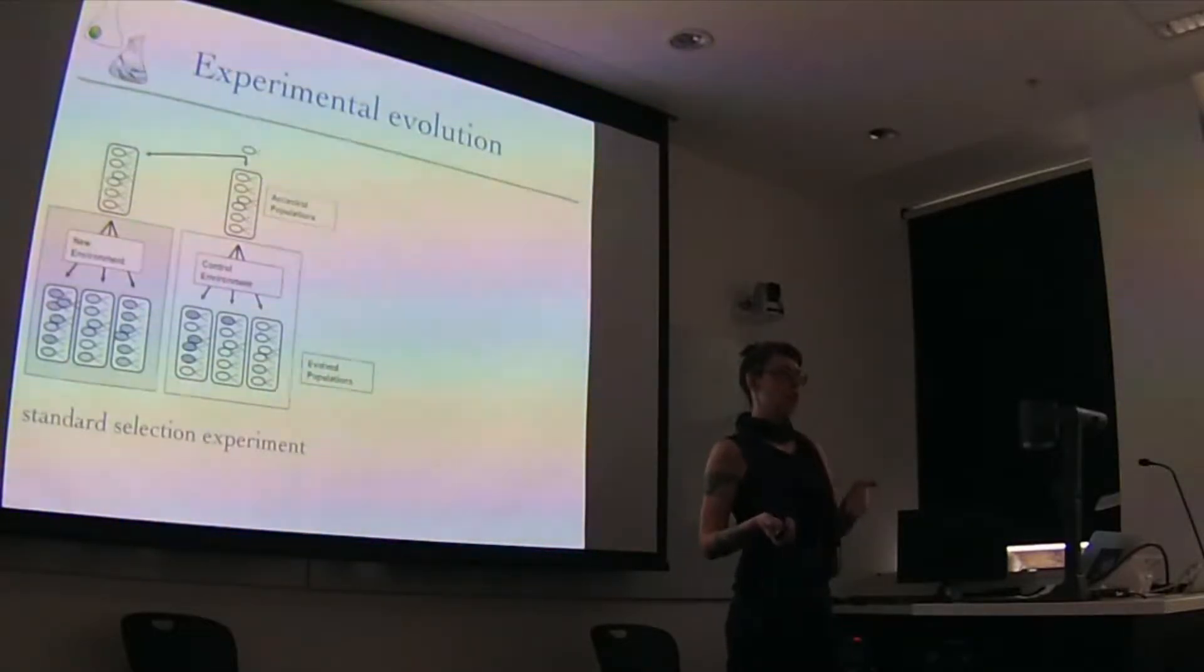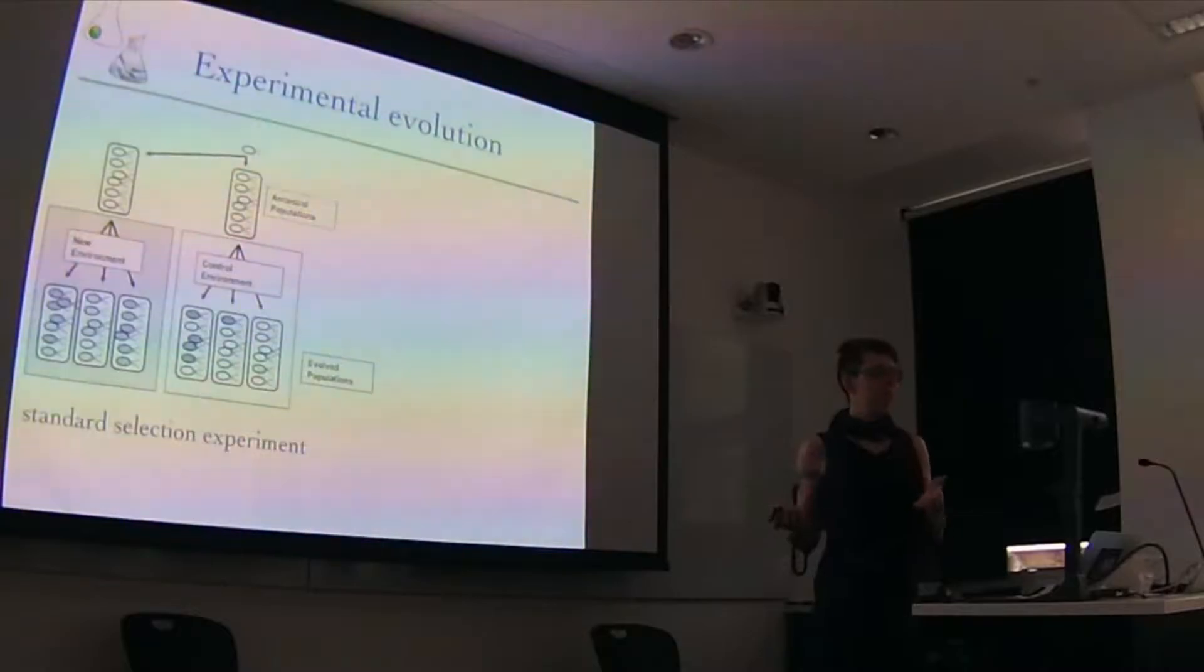So you start with some base population, and that population can have standing genetic variants or not. In my experiments that I'm going to show you, it does not. This is just because some of the other questions I'm asking have to do with distributions and mutational effects. So I need to know that all the mutations in my experiment are new mutations.